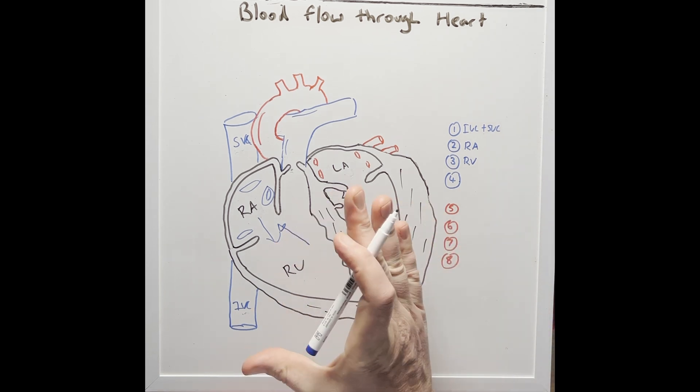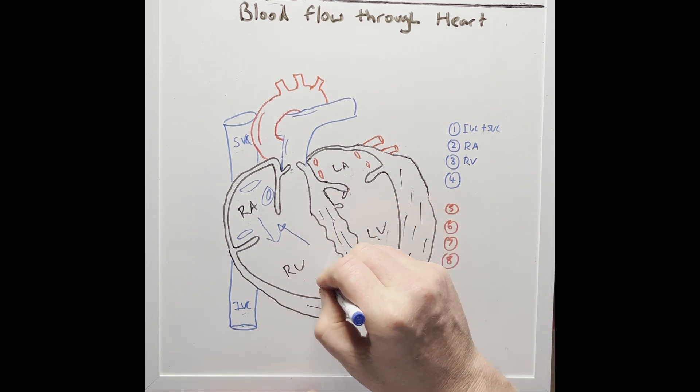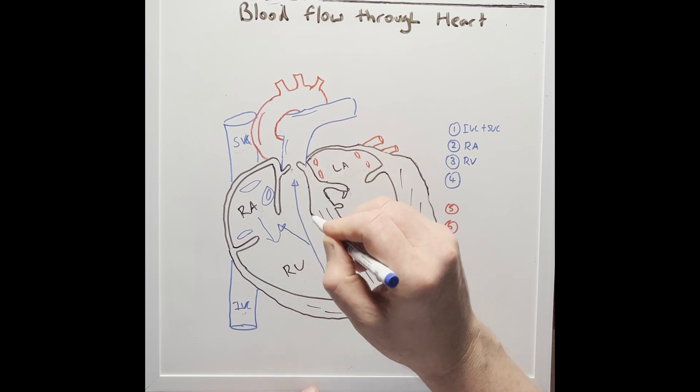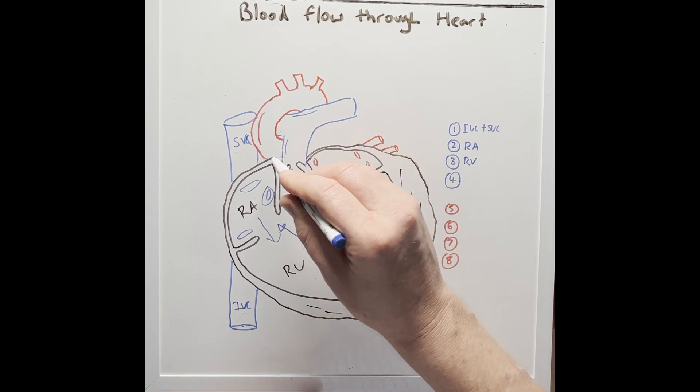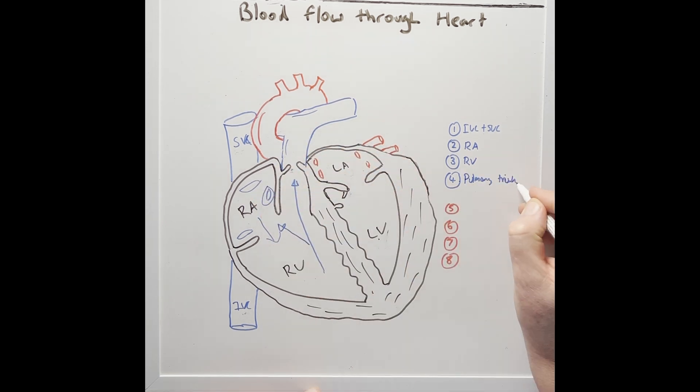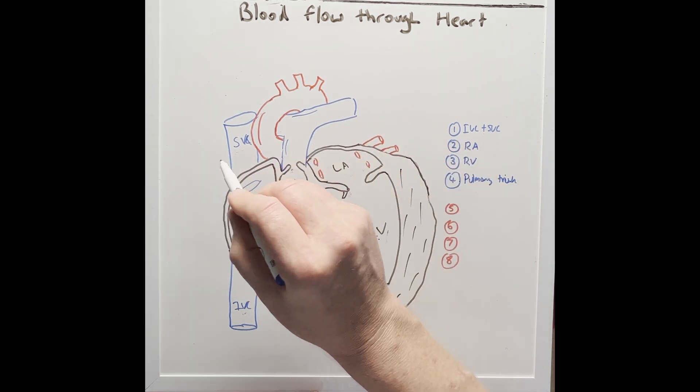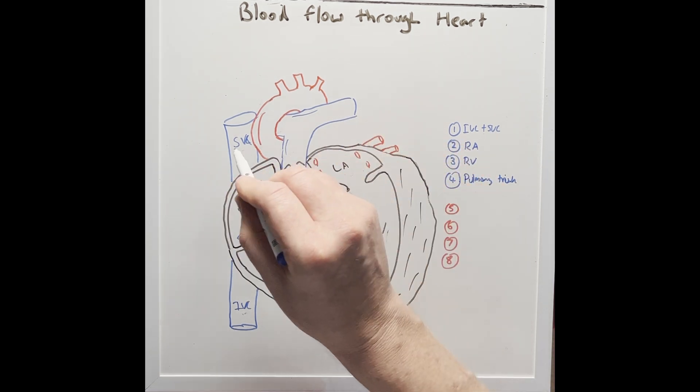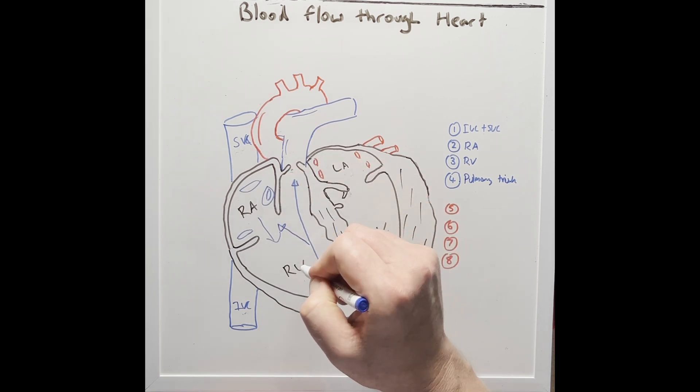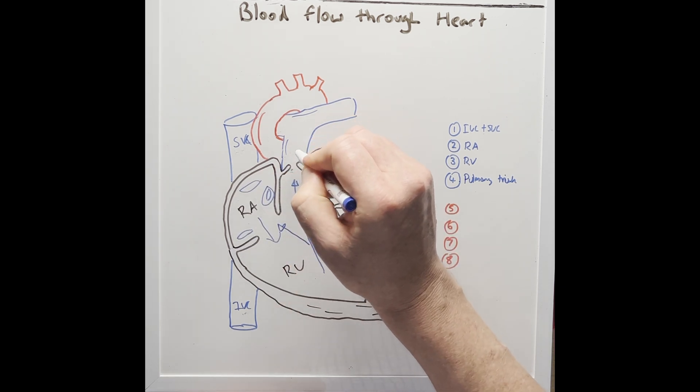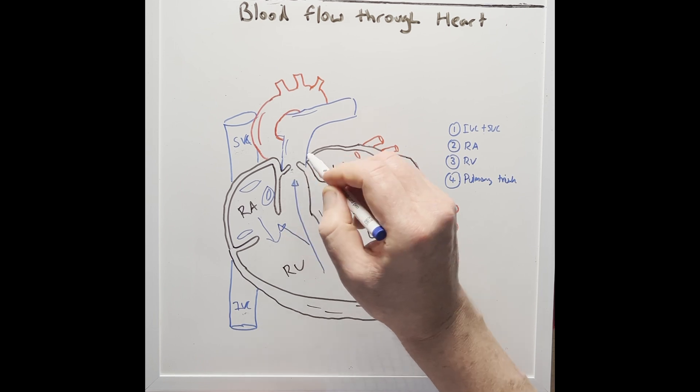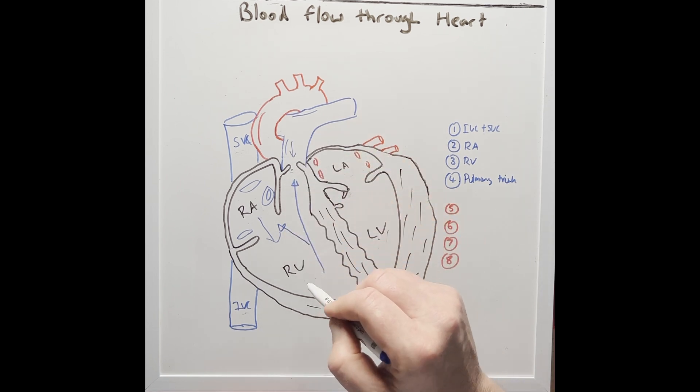Then we have contraction or systole of the heart, which pushes blood out of the ventricle. In this case, it's going to push it into the pulmonary trunk. Now from here, it will go to the left and to the right, to the left pulmonary artery and the right pulmonary artery. Blood that moves through the right ventricle into the pulmonary trunk goes through the pulmonary valve, and this prevents blood going backwards into the right ventricle.